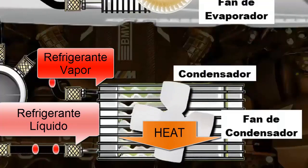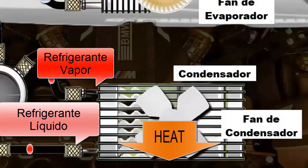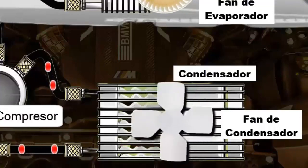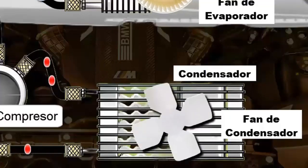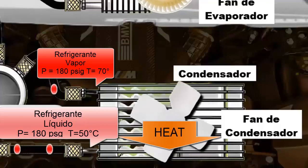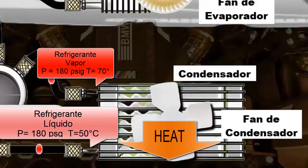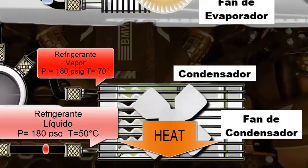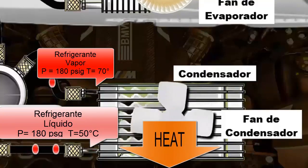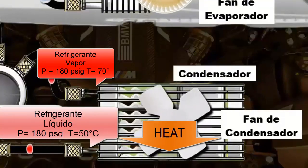The condenser fan promotes heat exchange. Upon leaving the condenser, the refrigerant maintains its high pressure but loses temperature due to heat expulsion into the environment. Therefore, its temperature at the condenser's exit is very close to the temperature of the external environment of the vehicle.